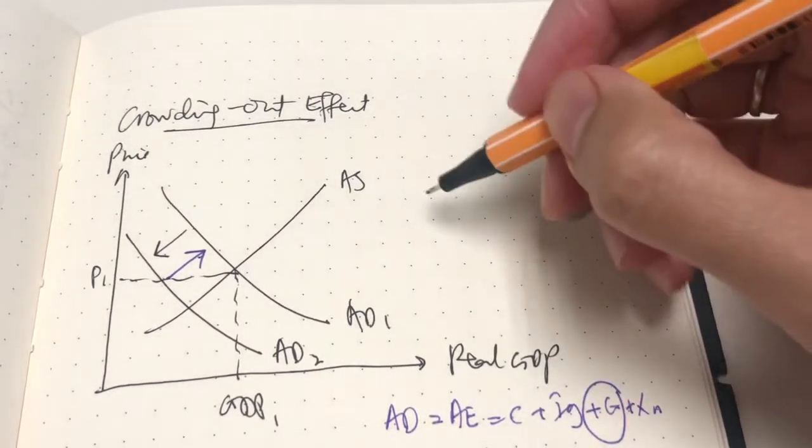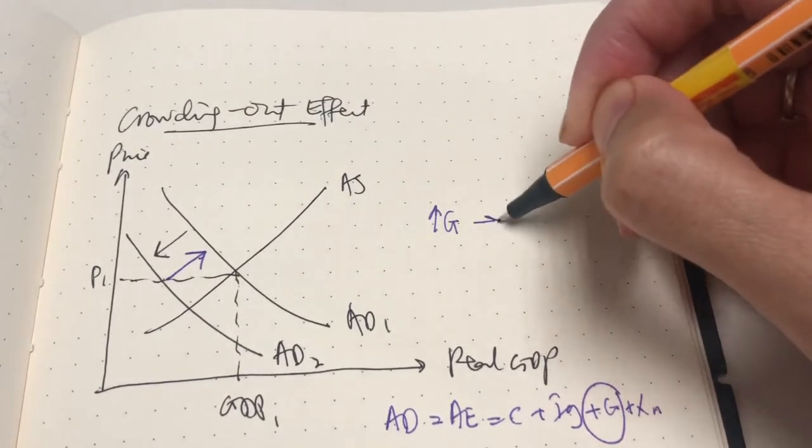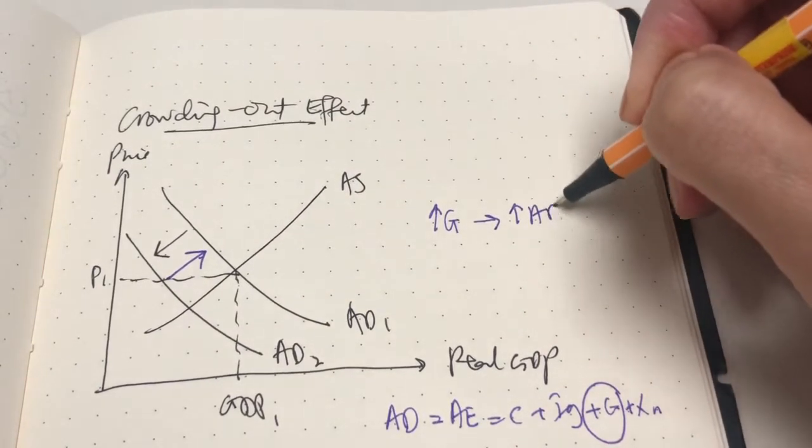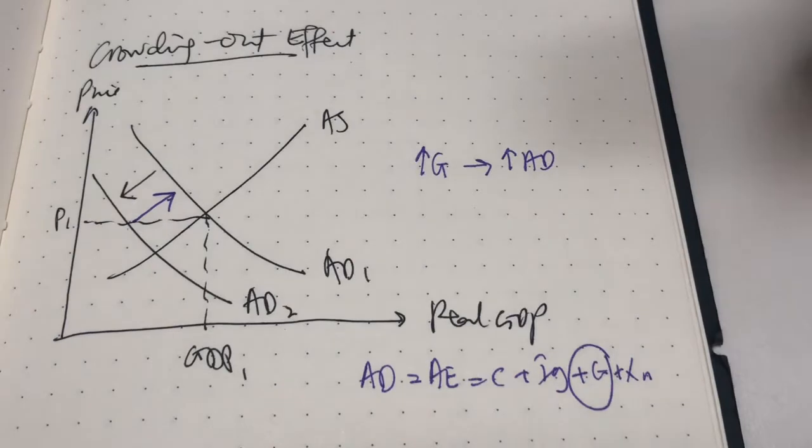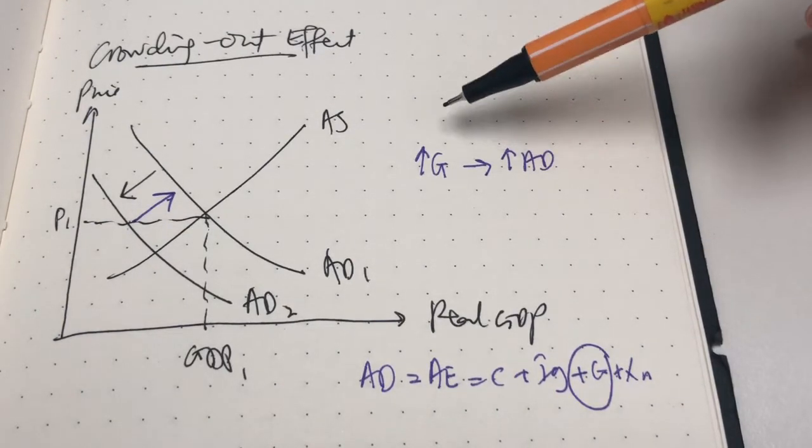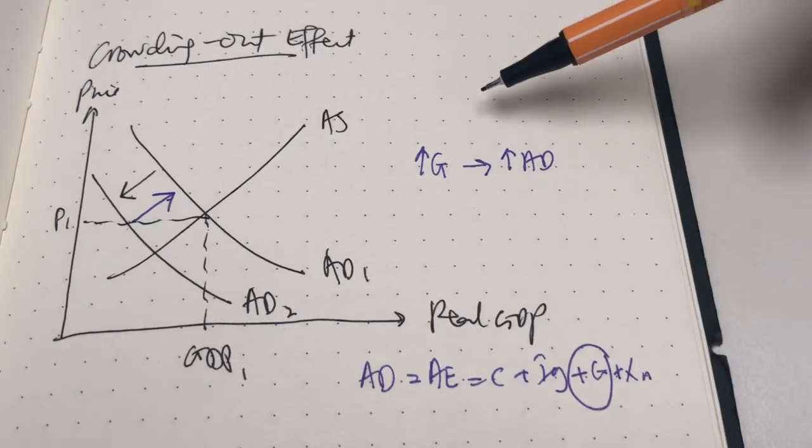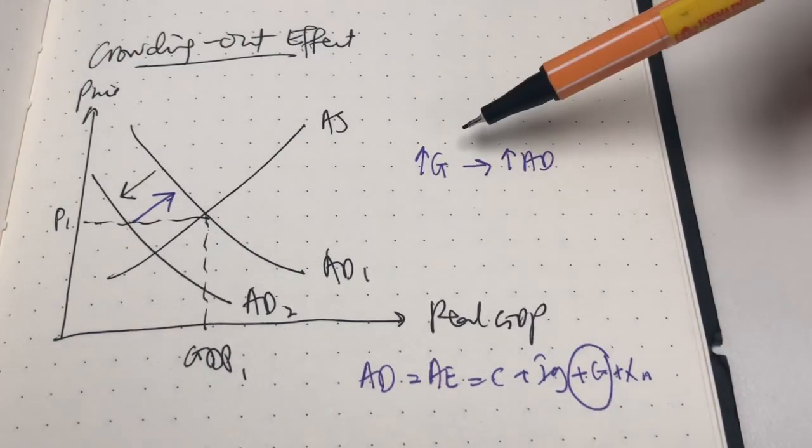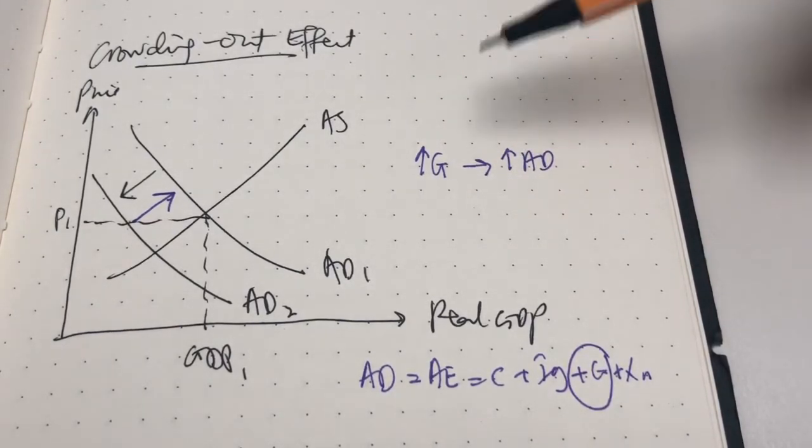Let me just write it down somewhere. Increase G, therefore increasing AD. When the government increases government spending in relation to unchanged tax revenues, we know now that there is budget deficit. The government has several options to finance that deficit.